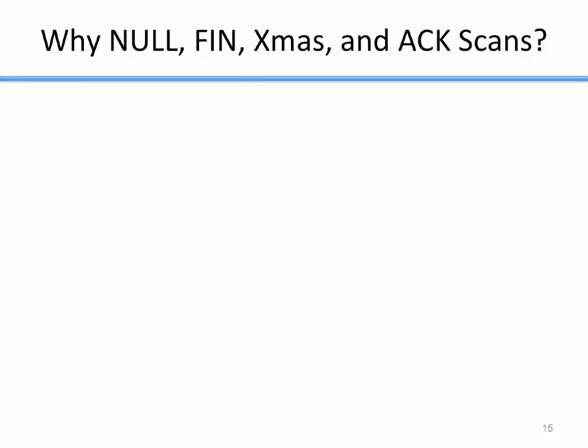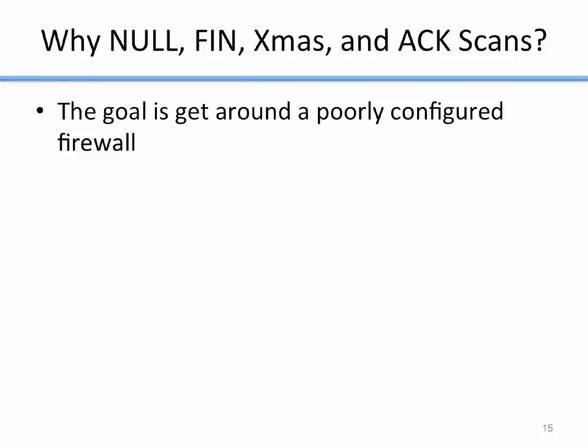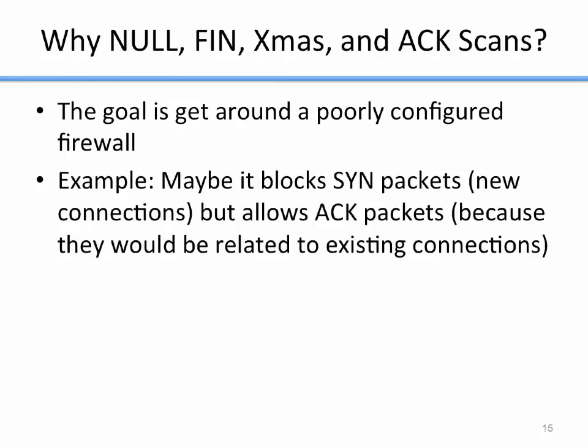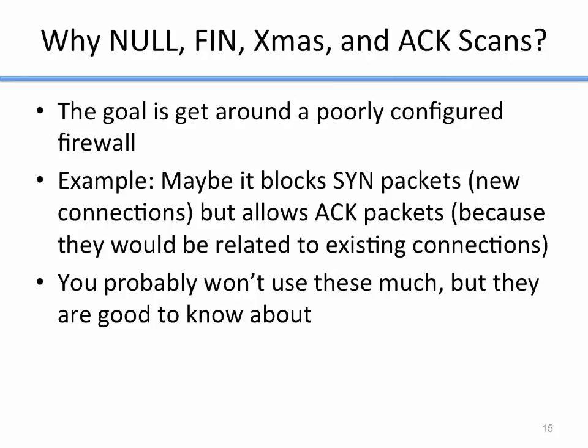Why use the null, FIN, Christmas, or ACK scans if they give less information? The SYN scan can easily distinguish between open, closed, and filtered, but these last scan types give less information. The goal of these scans is to get around a poorly configured firewall. For example, a firewall might block SYN packets — new connections — but allow ACK packets, thinking they're related to existing connections. If that's the case, an ACK scan could potentially get through. You probably won't use these much, but they're good to know about.